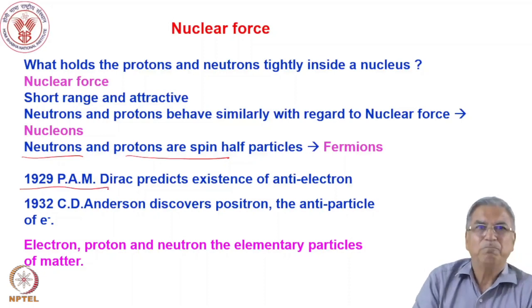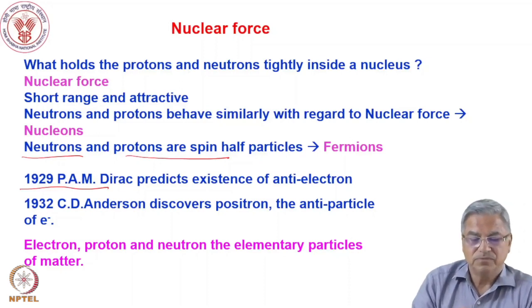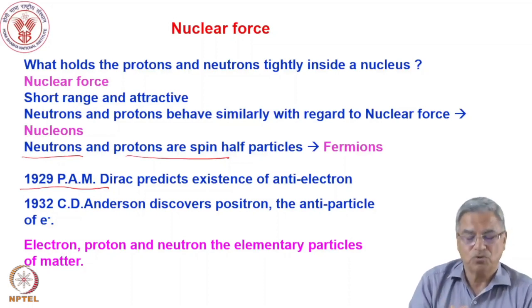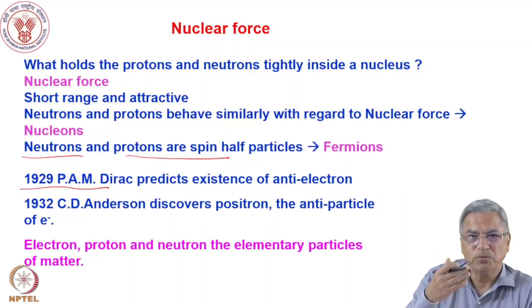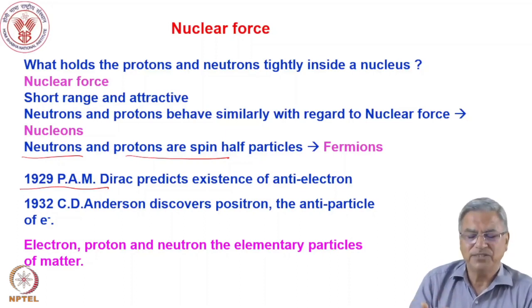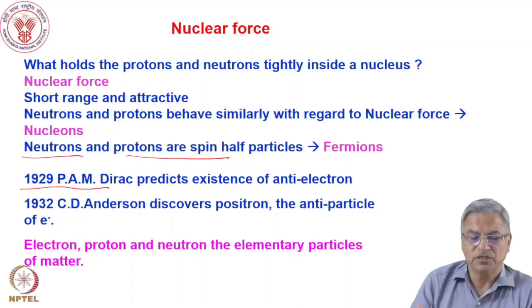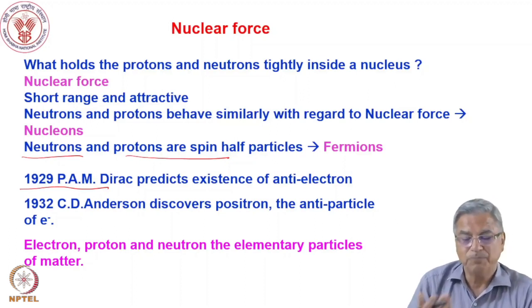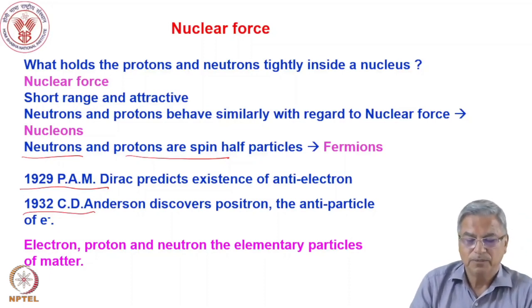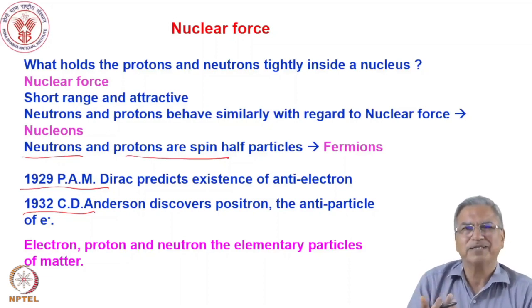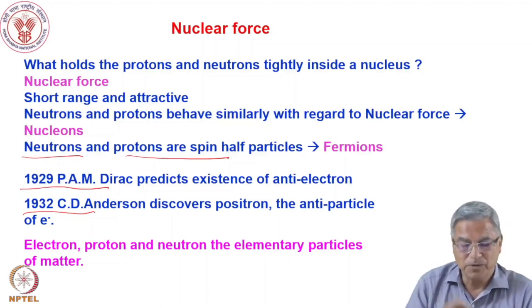In 1929, Paul Dirac in the UK predicted that the electron has an antiparticle which we call the positron. His thesis solved the equation of state of the electron and showed it has two solutions — the positive solution is the electron and the negative solution is the antiparticle of the electron, called the positron. Subsequently in 1932, C.D. Anderson discovered the positron. Gradually we see that every nuclear particle has an antiparticle, which becomes important in explaining many observations.